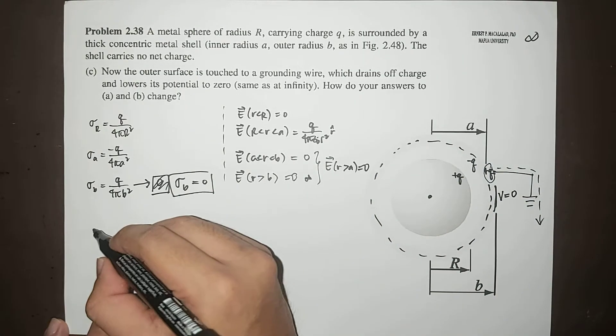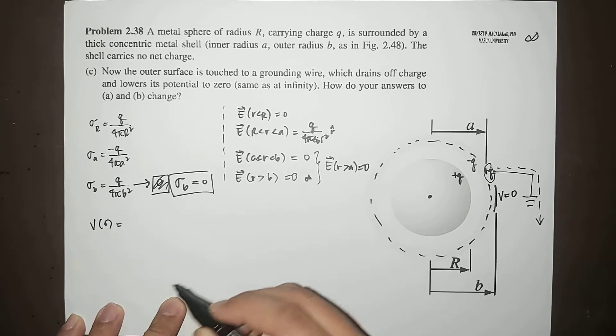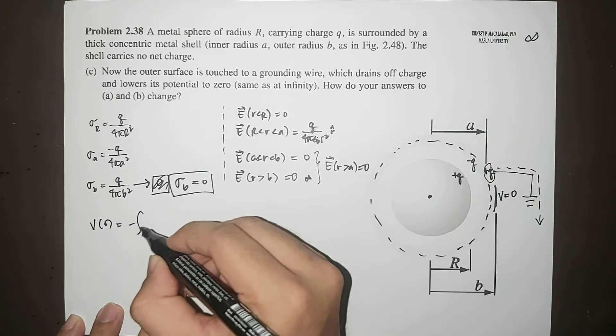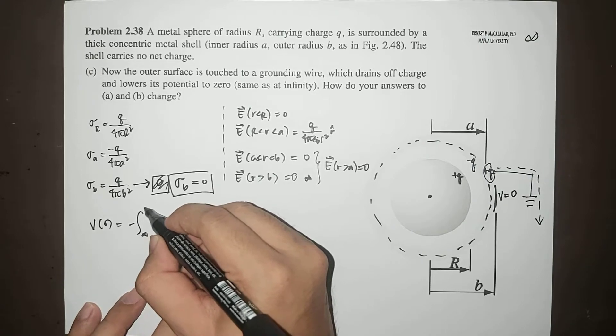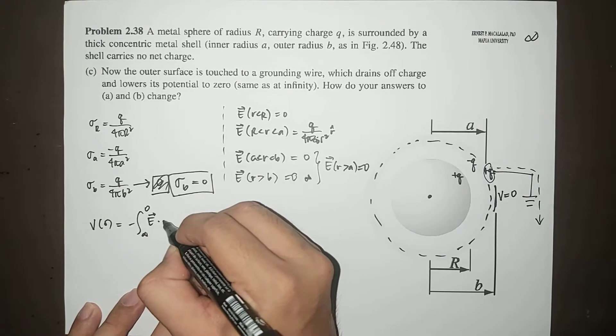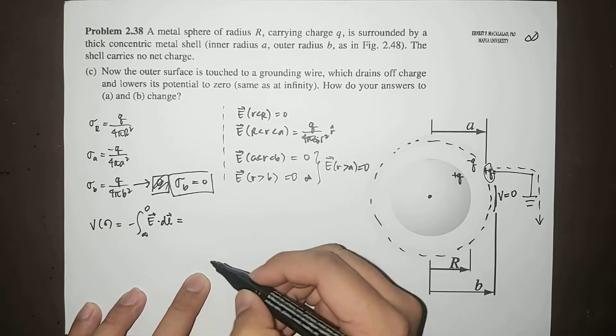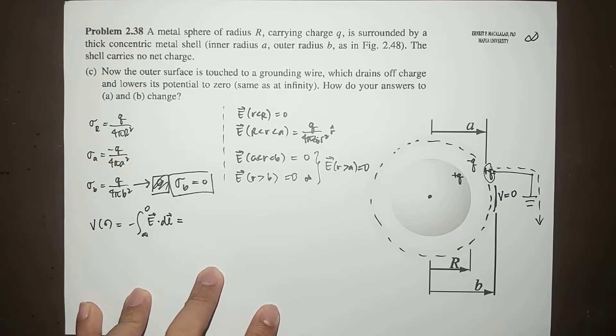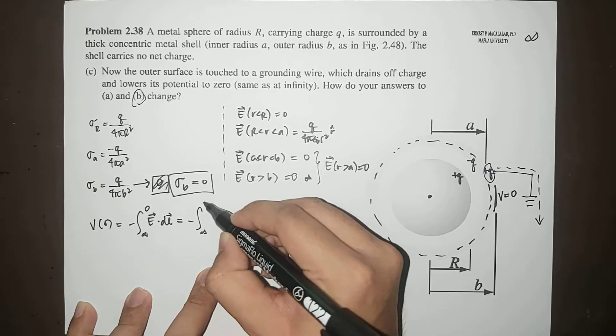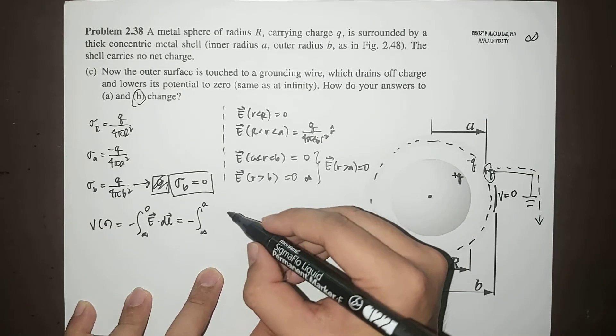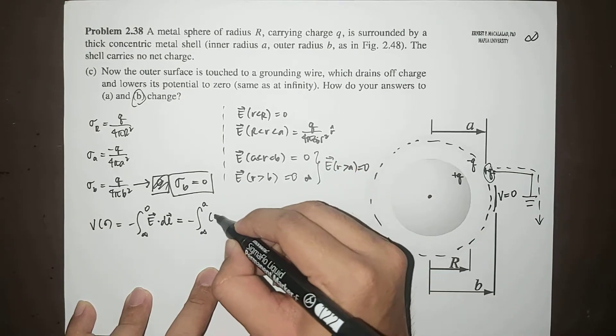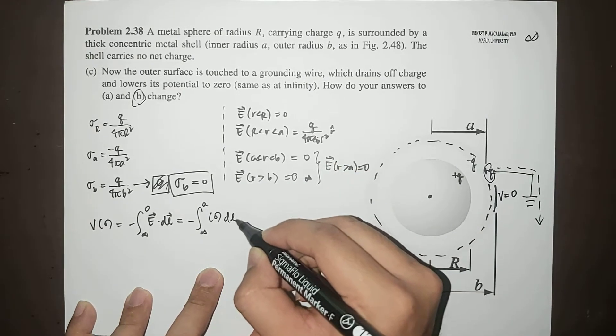So therefore the corresponding potential at the center, which is negative integral from infinity to zero of E dot dL, will now have three regions. So that means the four regions that we considered in letter B is now reduced effectively into three regions: from infinity to A where the electric field is zero dL or dR,